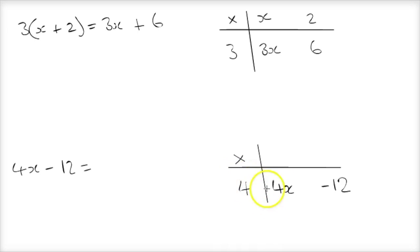What would I multiply 4 to get 4x? What would I multiply by 4 to get negative 12? And that proved to be a much more effective way of getting them to factorise into a single bracket.